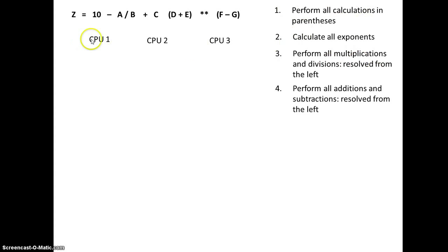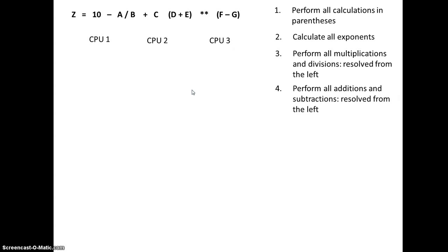So for this example, we're going to have three processors. And the first thing we're going to look for are all of the calculations that are in parentheses. Well, this D plus E has to get calculated before it's used in this other part of the equation. This F minus G has to get calculated, but they both can be calculated at the same time. In other words, these are four different variables, D, E, F, G.